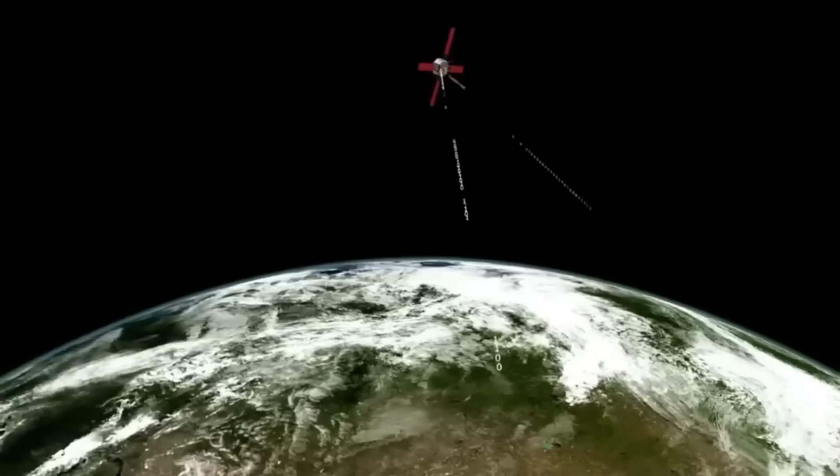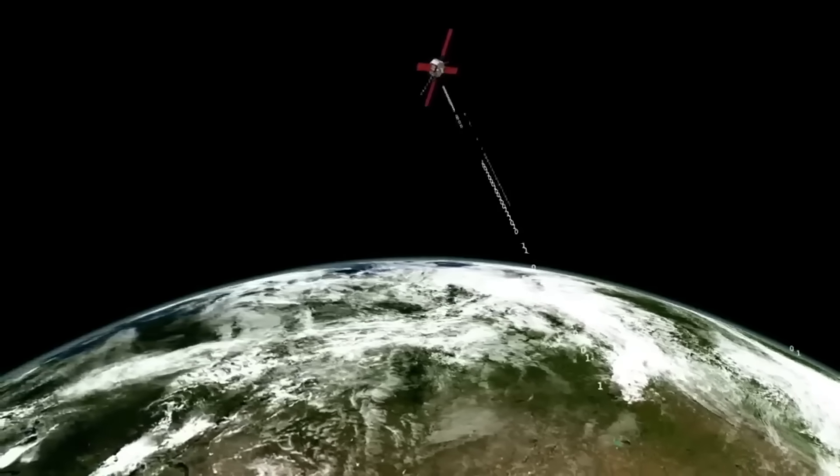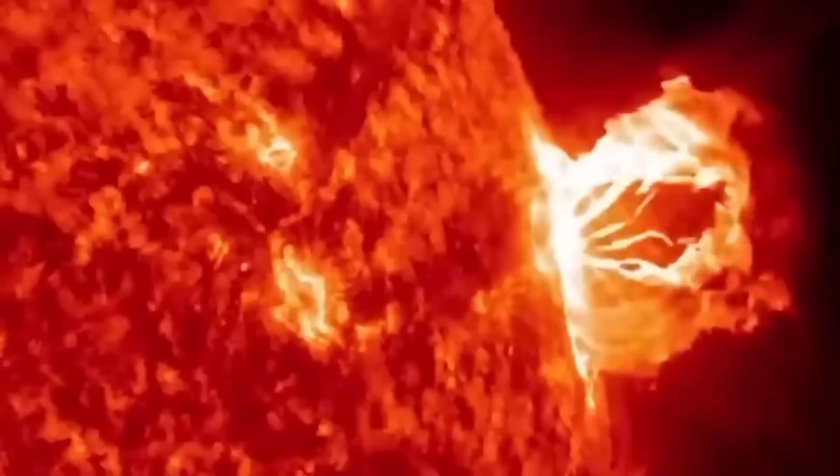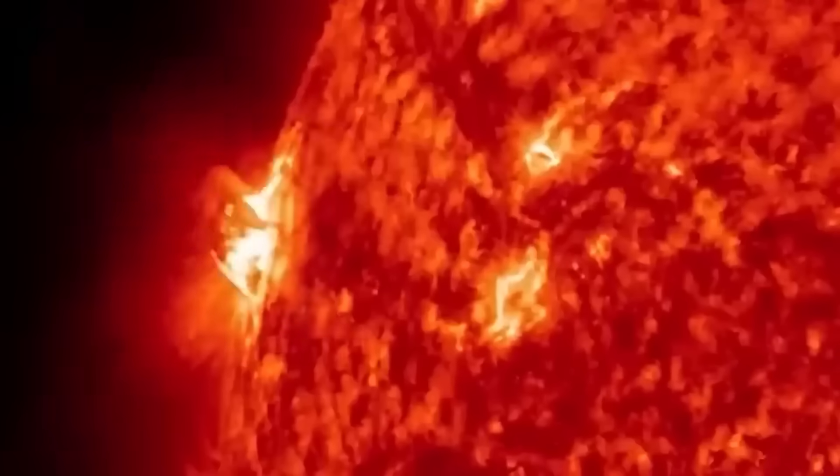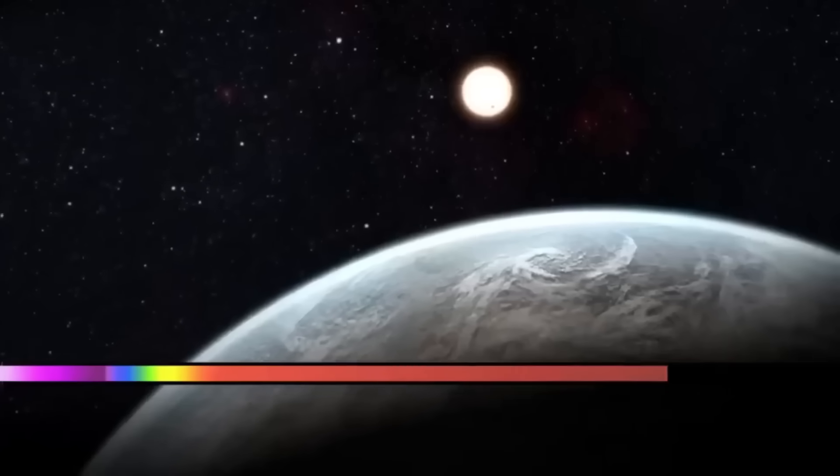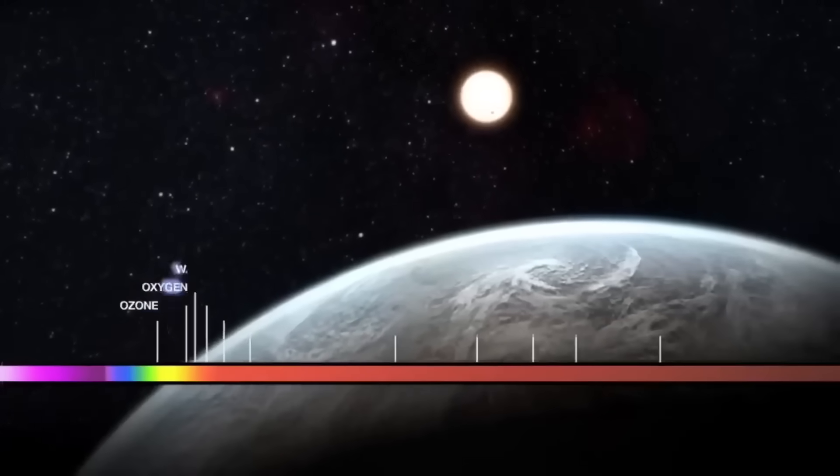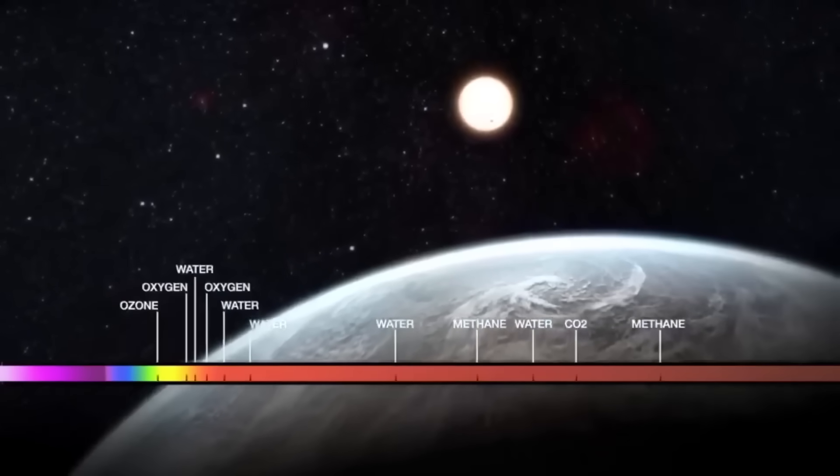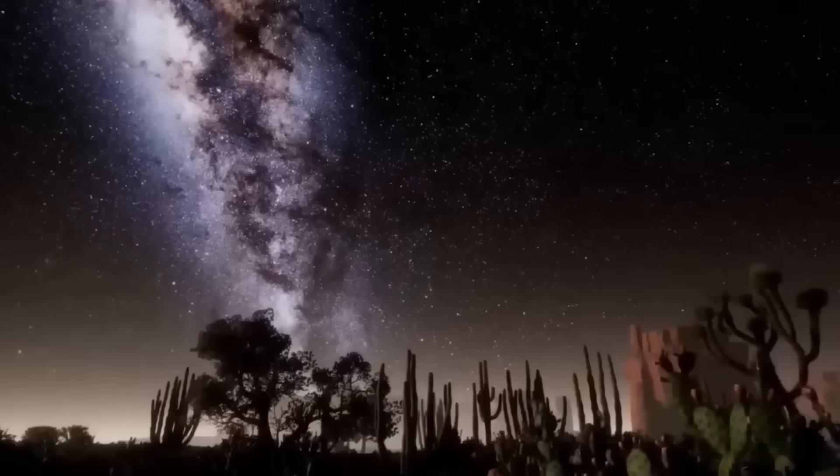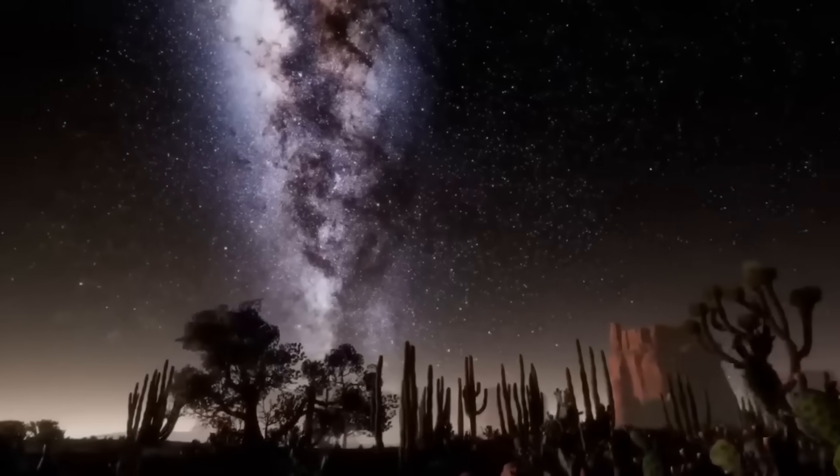Betelgeuse's age is equally remarkable. Estimated to be around 8 to 8.5 million years old, it may seem young by human standards, but in stellar terms, it is ancient. Stars like Betelgeuse have short lifespans compared to smaller stars like our sun, and its current phase represents the final stages of its existence. It has undergone a radical transformation from a hot blue star to the cooler red supergiant we observe today.